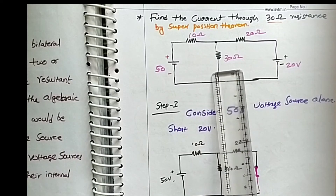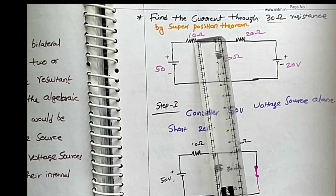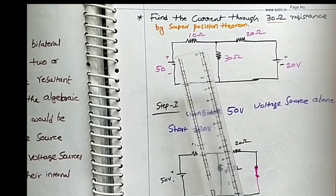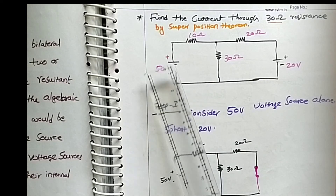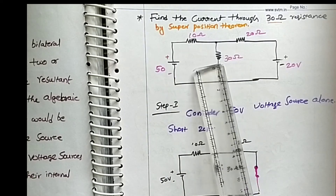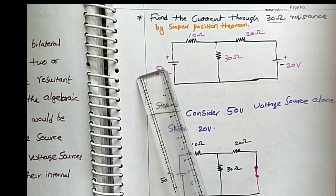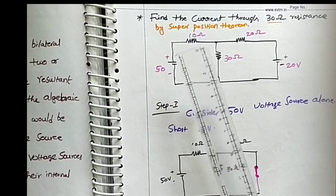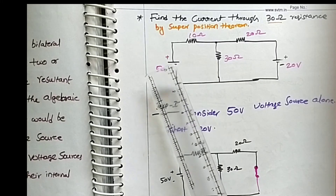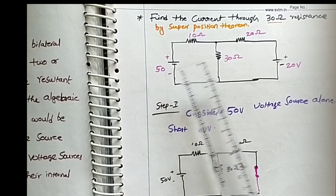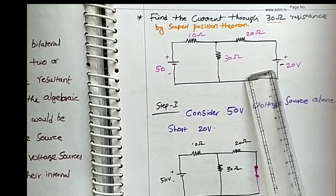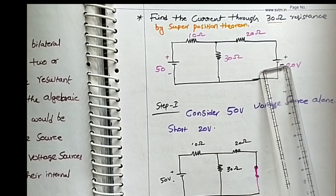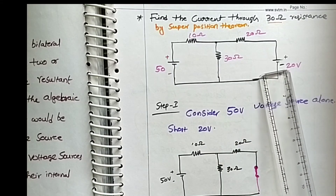Numerical problem: find the current through the 30-ohm resistance using superposition theorem. If you understand this problem, you can solve any type of question on superposition theorem. There are three resistances: 10 ohms, 20 ohms, and 30 ohms, and two voltage sources: 50 volts and 20 volts connected to this network. We follow three steps: step one — consider 50-volt source active and deactivate 20-volt source by short circuit.